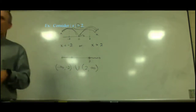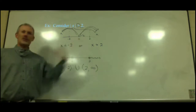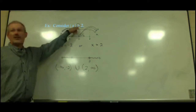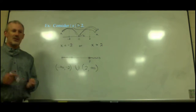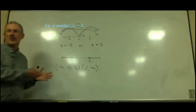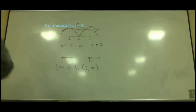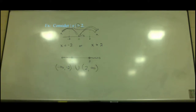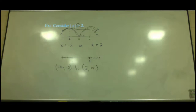In an absolute value problem with two separate areas, the boundary points will always match — either both parentheses or both brackets, both open circles or both closed circles. You'll never have one of each, because they're not giving you two separate statements — they're giving you one statement that we're breaking into two. Greater than means you're going to the outsides. Less than means you'll get the middle.